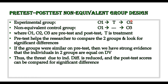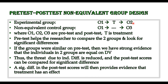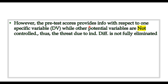If there is a significant difference in the post-test scores and the mean in the experimental group is higher than in the control group, we can say the treatment was effective. However, the pre-test only provides information about one specific variable — the dependent variable — so we can say the two groups are equal only on that specific DV. We cannot say whether the two groups are equal on other variables not measured on the pre-test. Therefore, other potential variables are not controlled, and the threat to internal validity is not fully eliminated, again because of the absence of random assignment.